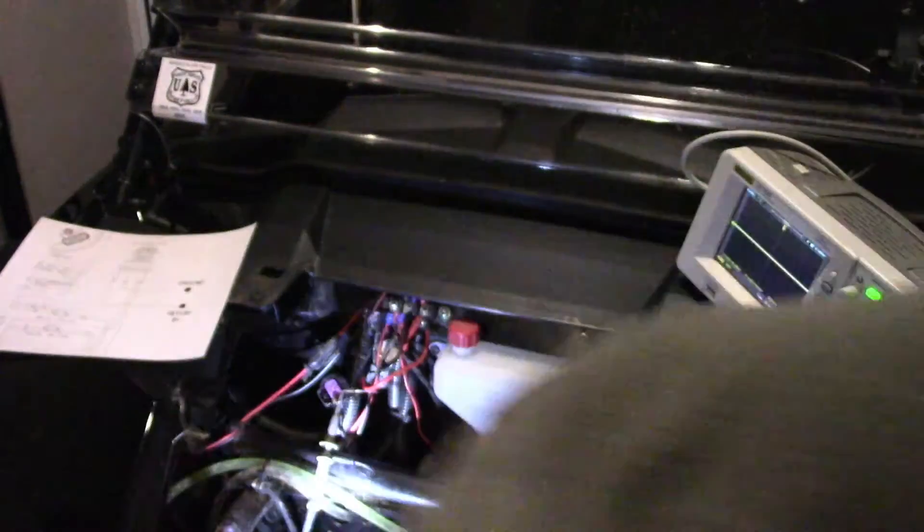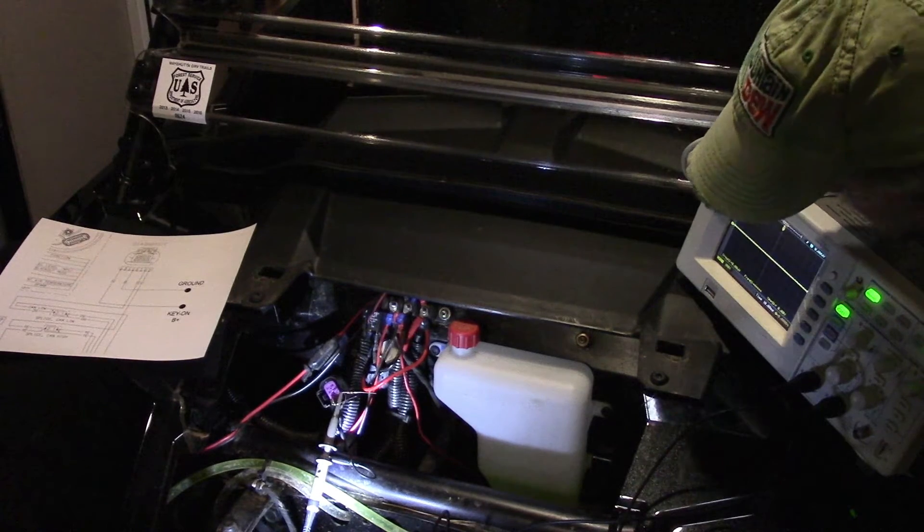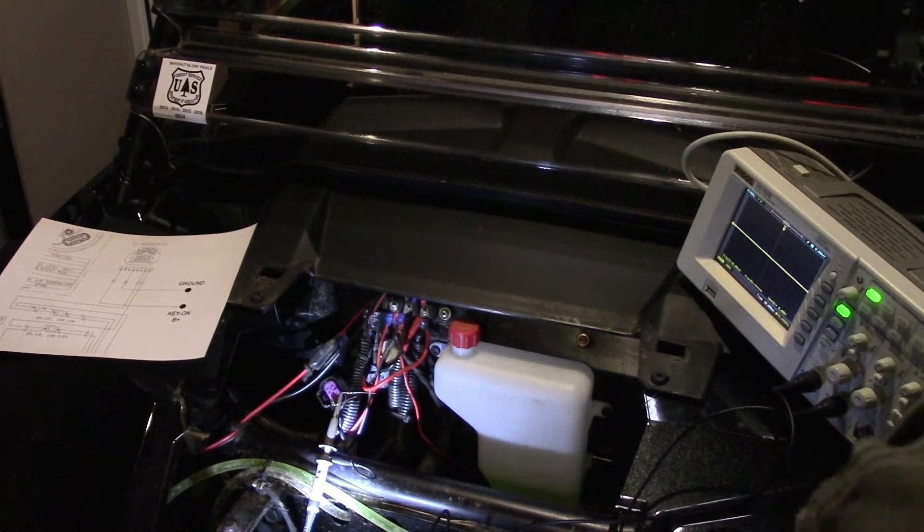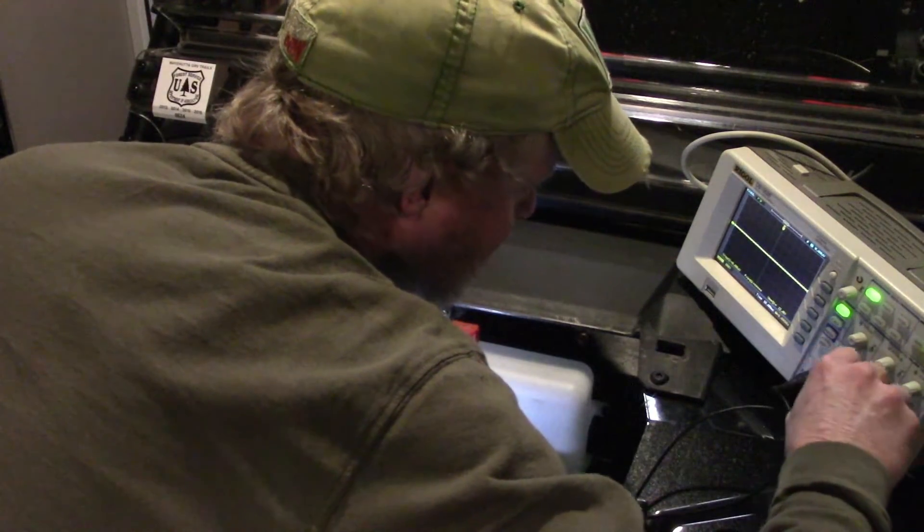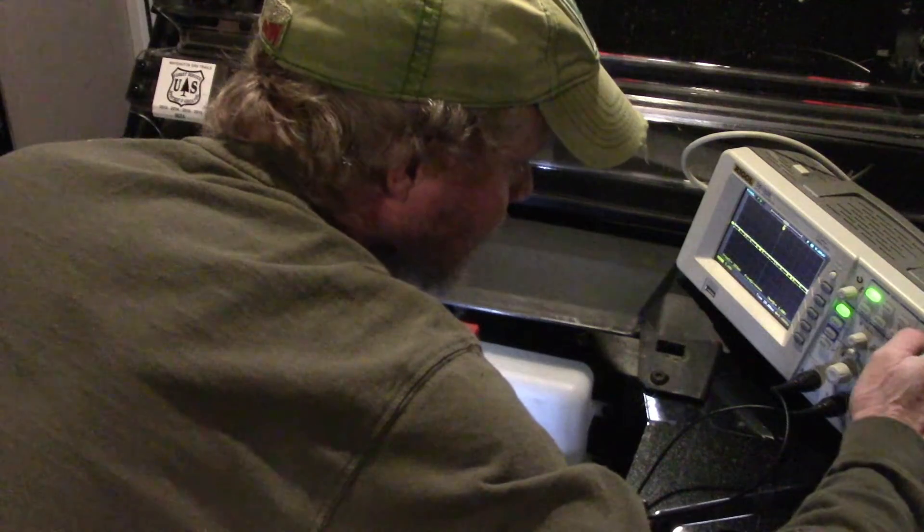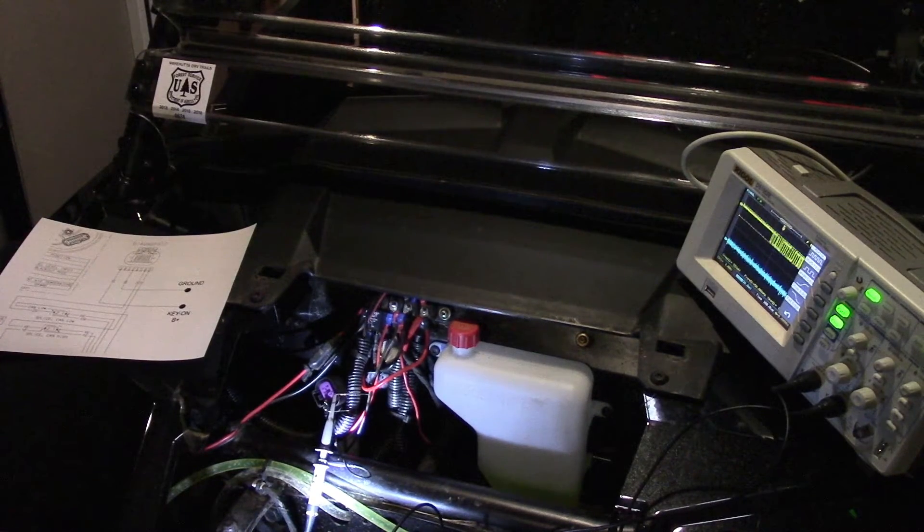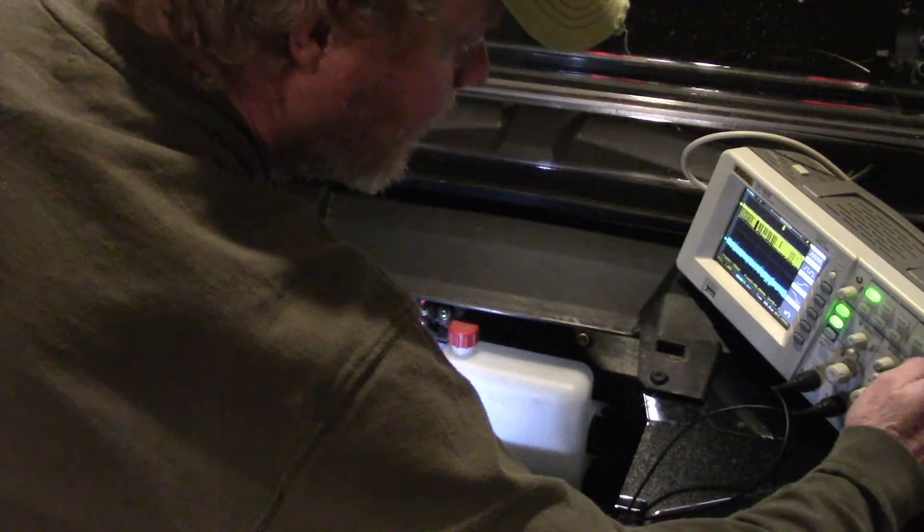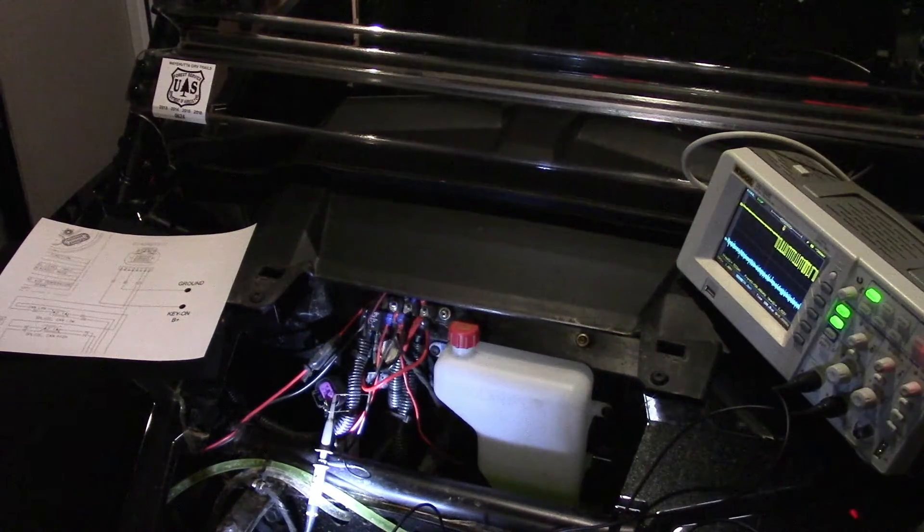Let's go get some CAN activity going. Okay, and you can see on the scope, I've just turned the key on, we've got some activity. Now I've got that captured, I'm just going to turn this off real quick.